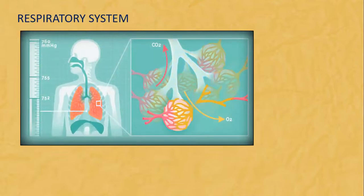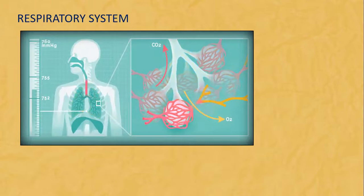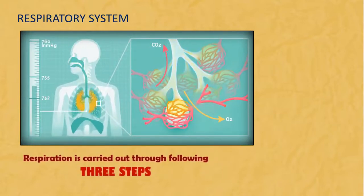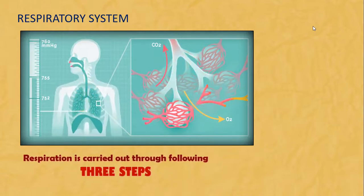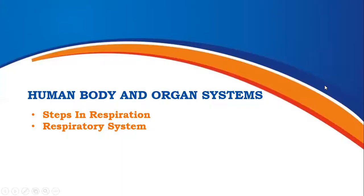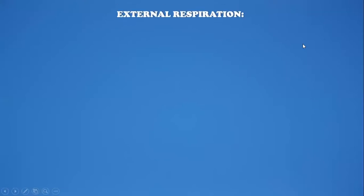Now let's talk about our respiratory system. We are inhaling oxygen and exhaling carbon dioxide. Respiration is carried out through three steps. Let's see the steps of respiration — first is external respiration.